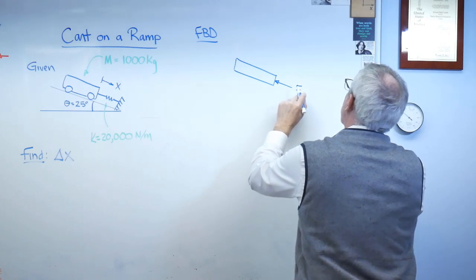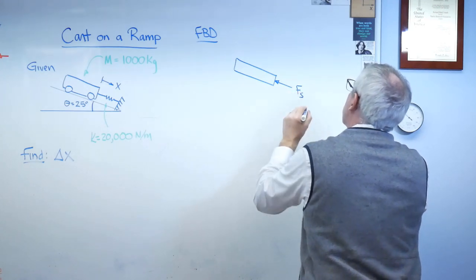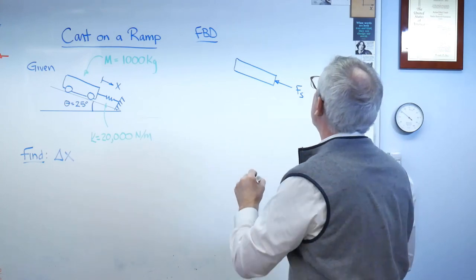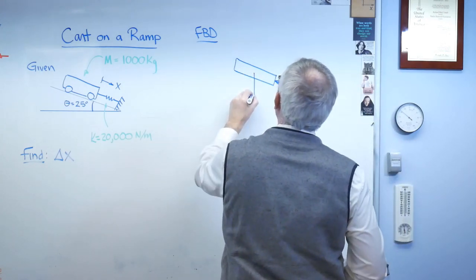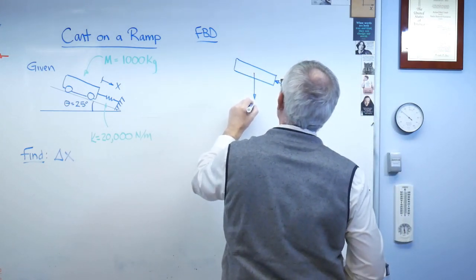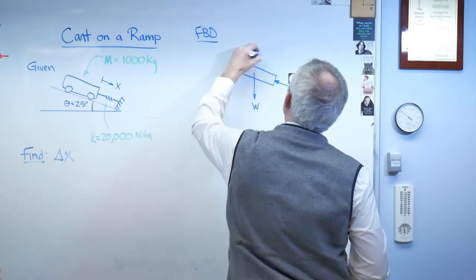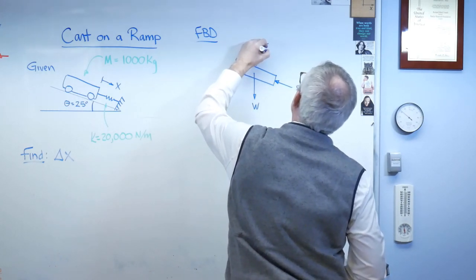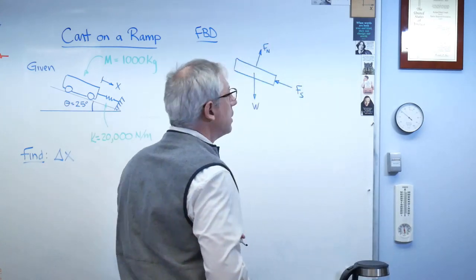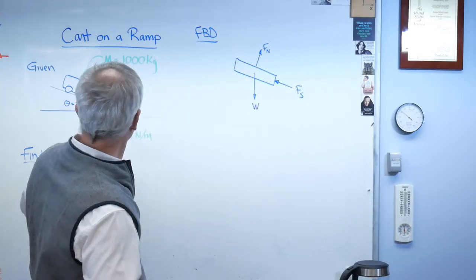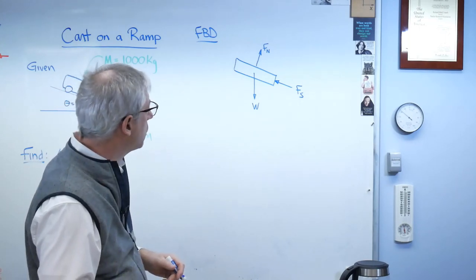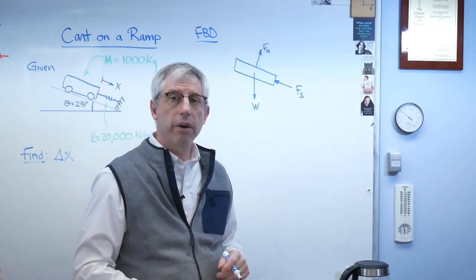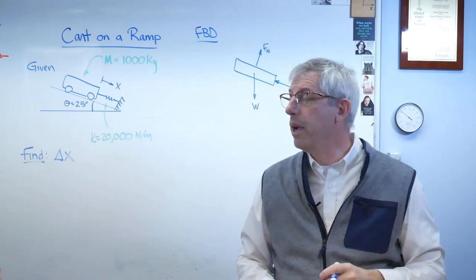So there's the force of the spring. There's the force of gravity. There's the weight. And there's going to be a force up from the ramp pushing up on the cart. So this isn't a free body diagram yet. In order to be a free body diagram, it has to have a positive sign convention.